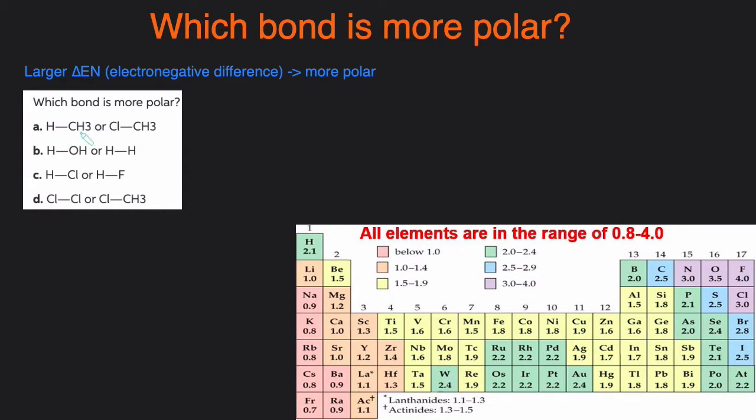In each of these cases we're going to determine which of the bonds are more polar. The first one: H-C bond versus C-Cl bond. So let's take a look at H right here and C right here. The difference is 0.4, and then the second is between C and Cl and that difference is 0.5. So since C-Cl has a greater electronegativity difference, it's going to be more polar.